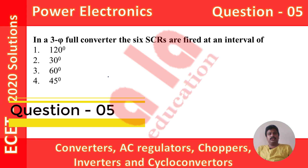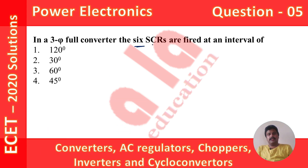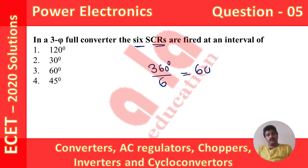Now coming to question number 5. In a three-phase converter, the 6 SCRs are fired at an interval of? We are given that there are 6 SCRs. The angular displacement for one cycle is 360 degrees and we have 6 thyristors, so each thyristor will be fired at an interval equal to 360 divided by 6, which is equal to 60 degrees. The answer is 60 degrees, and option 3 is the correct option.